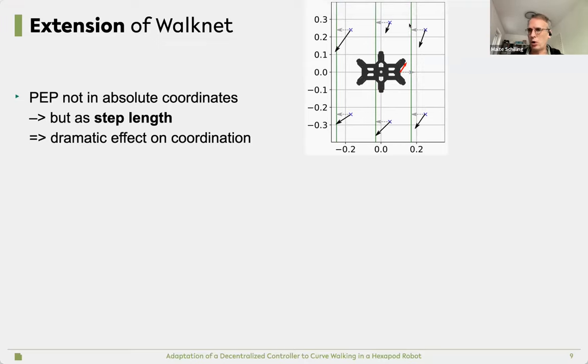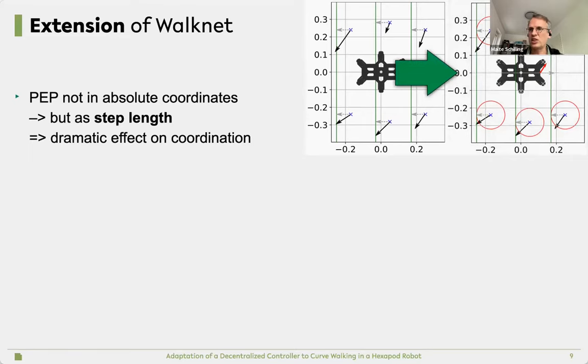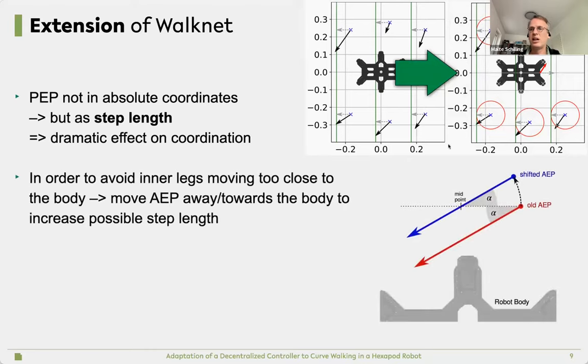A simple extension is to look at the real step length, looking at the radius from the starting point to anterior extreme position. This has a dramatic effect already on coordination. The next problem which might occur in tight curves is that if you're moving into a tight curve, you're pushing your leg under your body, the inner leg, and the outer is getting too far outstretched. So we're just adjusting the swing movement that it's aiming more away from the body for the inner legs and for the outer legs closer to the body. The last part is to get this movement. I'm not going into details on how the kinematic trajectories are computed. We use an internal body model for this. Basically we pull it at the front. If you want to do turning on the spot, we introduce another vector which is pulling at the back, so we can do turning on the spot.